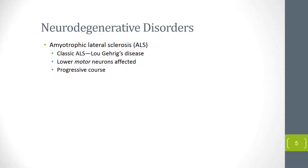In ALS, lower motor neurons die, causing denervation of muscles. With no nerves connected, the muscle fibers shrink and present with atrophy. This atrophy secondary to denervation is called amyotrophy, which is why the disease is named amyotrophic lateral sclerosis. The term 'lateral sclerosis' reflects the fact that nerve fibers in the lateral columns of the spinal cord white matter are affected.